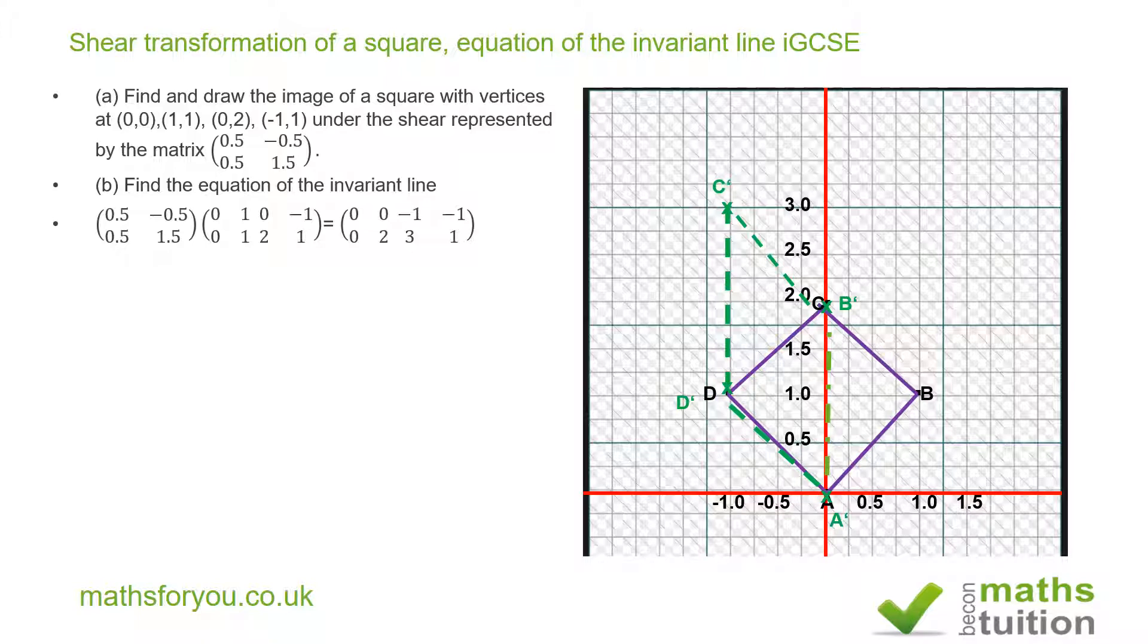The line AD has the equation y equals -x. That's the second part of the equation, y = -x.